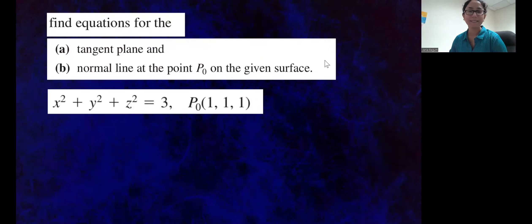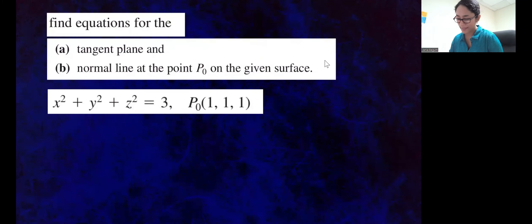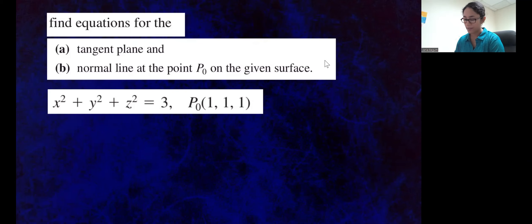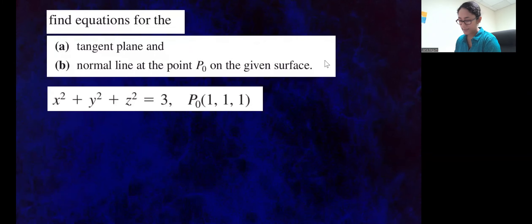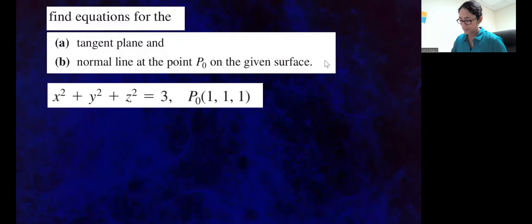Hi, everyone. We have a very interesting example here. Let's find the equations for the tangent plane to the surface at the point P-O, and then we're also going to find the equation of the normal line. So let's take a look at what this is.